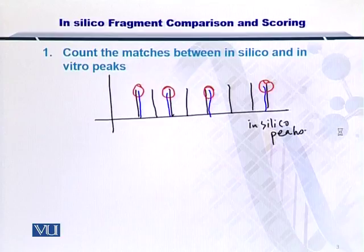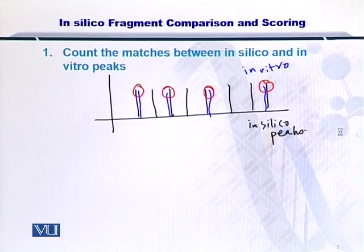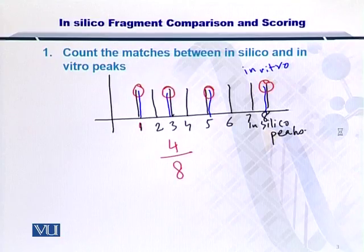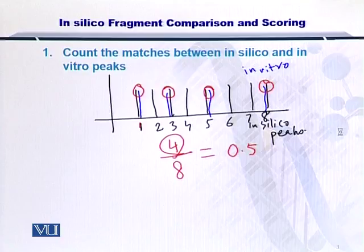So, 4 experimental peptides — call them the in vitro peptides — 4 peptides match with the in silico peaks. The in silico peaks in all: 1, 2, 3, 4, 5, 6, 7 and 8. So, 8 peaks were there and only 4 could match. In this way you can arrive at a score of 0.5 or simply a score of 4. You have simply scored the in silico and in vitro comparison by counting the number of matching peaks.